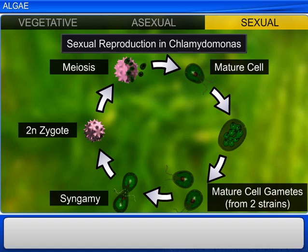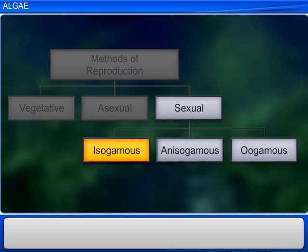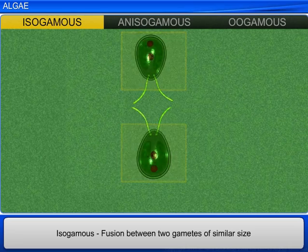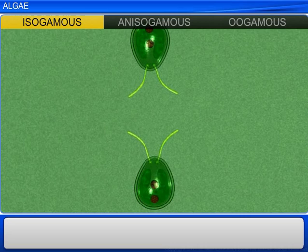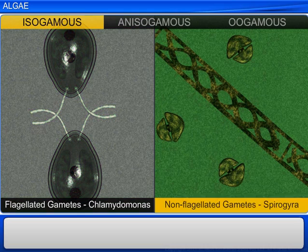During sexual reproduction, two gametes fuse to form a new organism. Based on the size of the gametes, sexual reproduction can be further divided into isogamous, anisogamous, and oogamous reproduction. When the fusion is between two gametes of similar size, the reproduction is called isogamous. The gametes in this case can be flagellated, as in Chlamydomonas, or non-flagellated, as in Spirogyra.